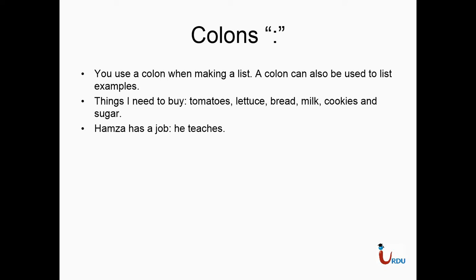Colons. You use a colon when making a list. A colon can also be used to list examples — these are two very different things. First example: Things I need to buy: tomatoes, lettuce, bread, milk, cookies, and sugar. It's just a list, and each item is separated by a comma, and the last item comes after an and. Second example: Hamza has a job: he teaches. The second example does not have a list — instead, the colon tells you what is happening. It is an example in and of itself. You only use this, however, in formal business writing. If you are writing a letter to a friend, it's better to just use a comma.